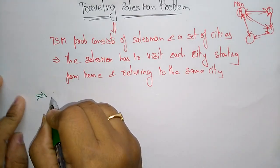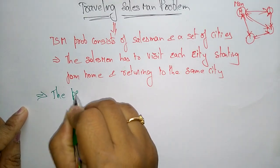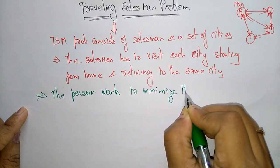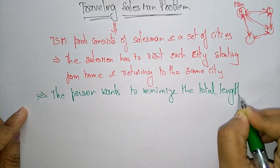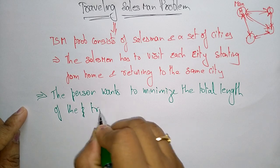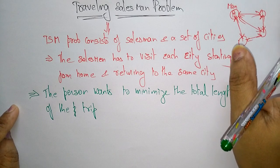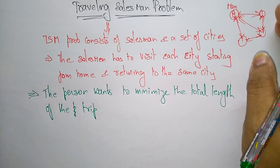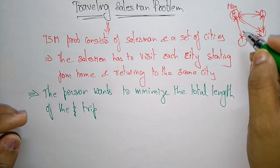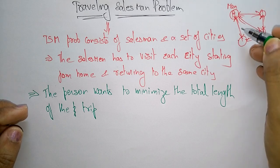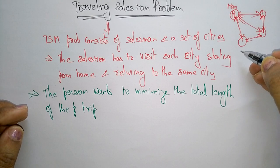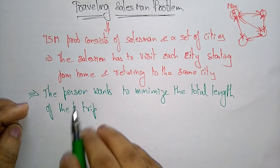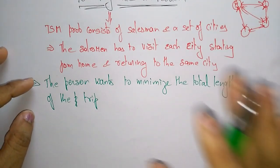The main challenge of this problem is that the person wants to minimize the total length of the trip. Suppose if we want to visit all the cities in one country, we think about which cities to visit and also the budget — which route to take so that the budget becomes less, meaning we spend less money while traveling. That path will be selected.